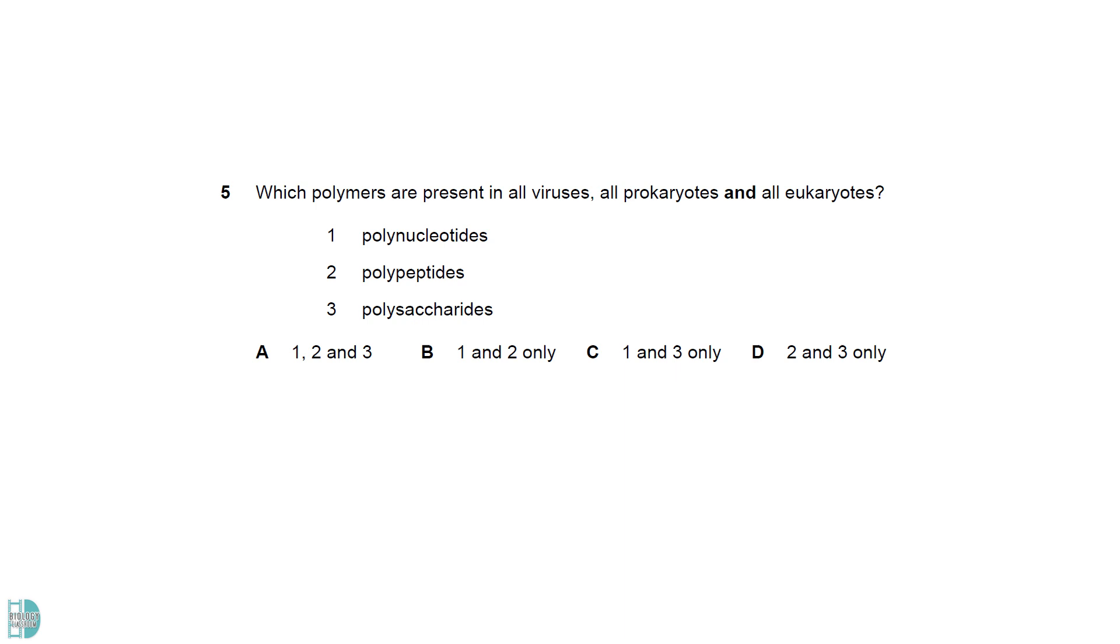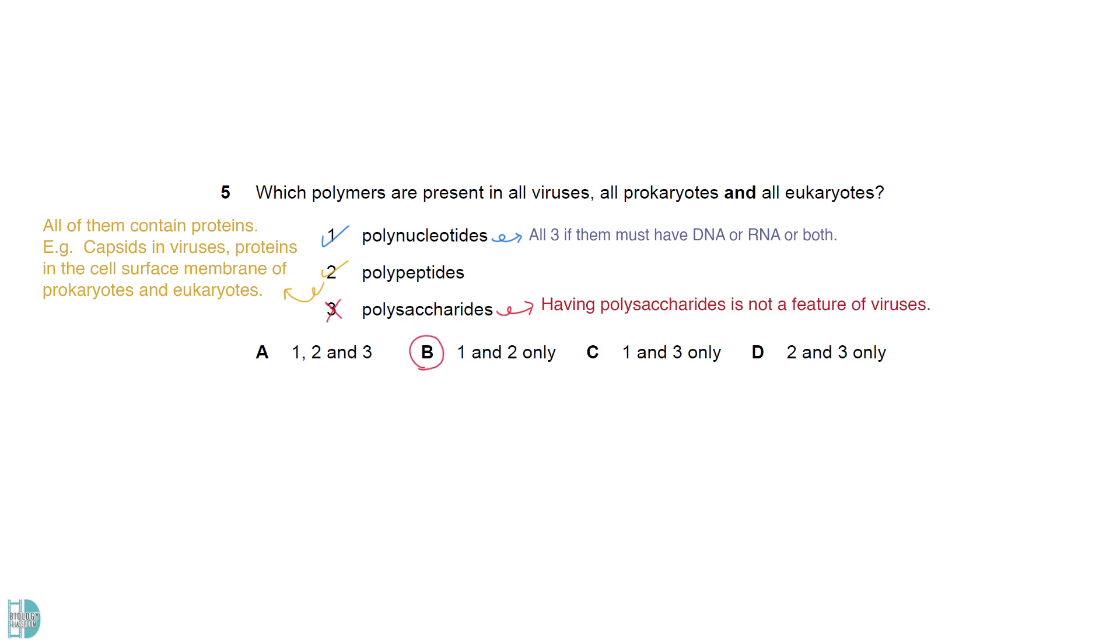DNA and RNA are polynucleotides. All of them must have at least one type of it as the genetic material. They have polypeptides, as all of them contain some kind of proteins, such as capsids in viruses, and proteins in the cell surface membrane of prokaryotes and eukaryotes. Having polysaccharides is not a feature of viruses.